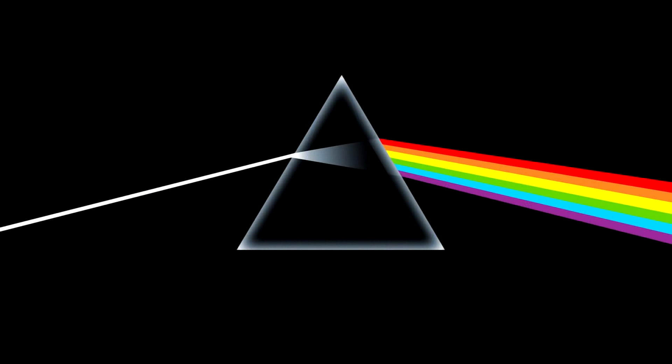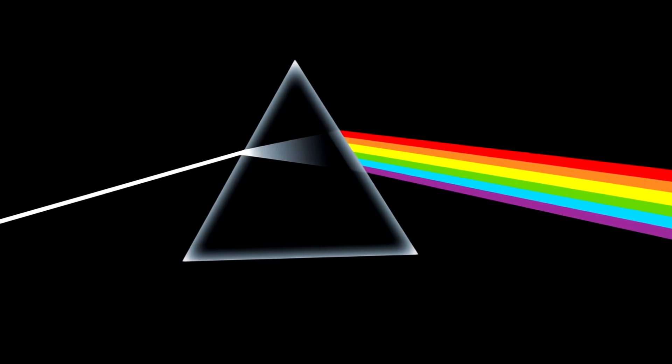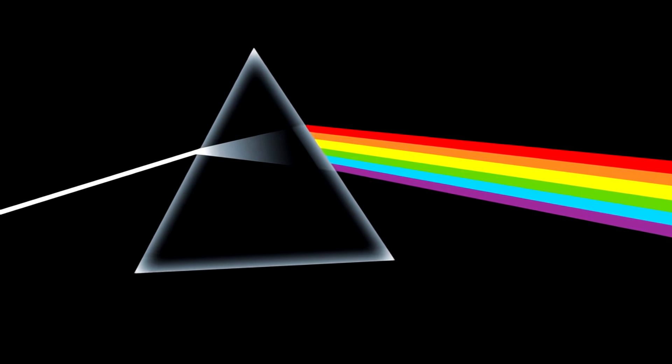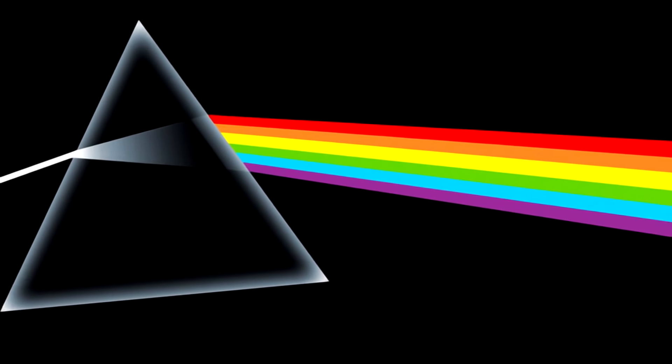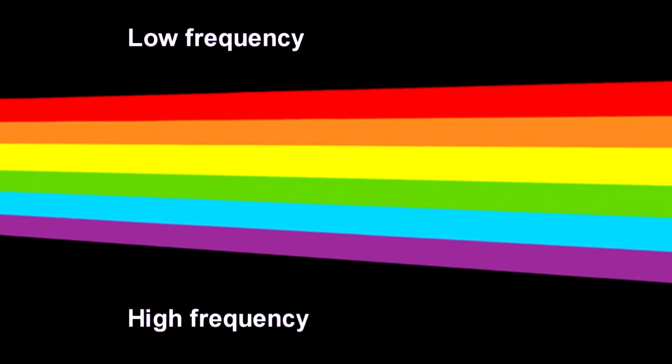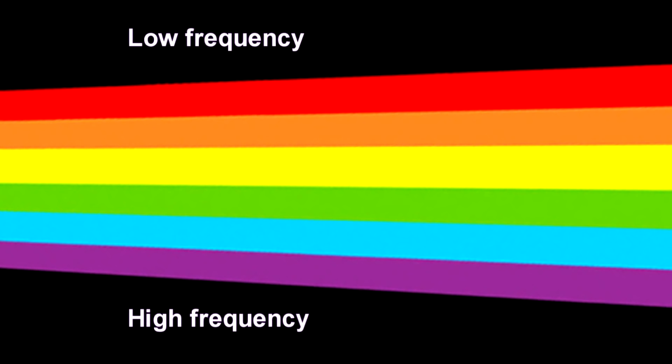Newton showed that the sun's light can be dispersed into the colors of the rainbow with a crystal. This effect comes from the wave nature of light. Different colors represent different light frequencies. The higher the frequency, or inversely, the shorter the wavelength, the more it's bent by the crystal. This produces a spectrum of light, with blue and violet at the high frequency end, and red at the low frequency end.